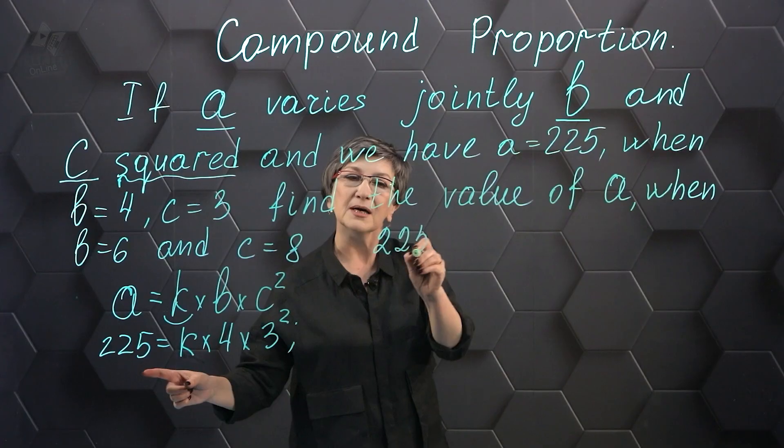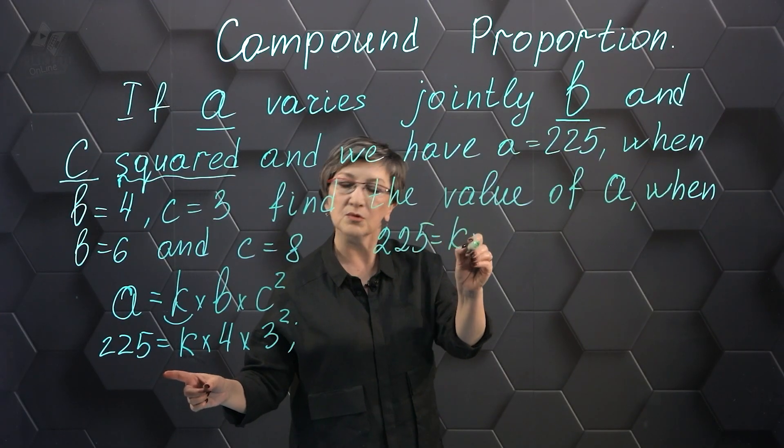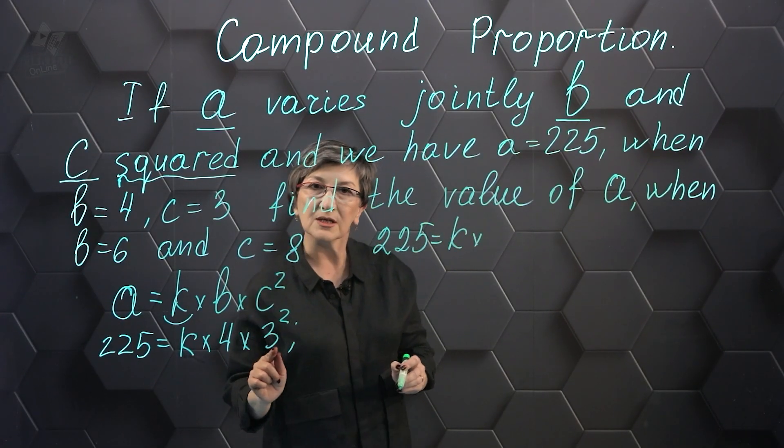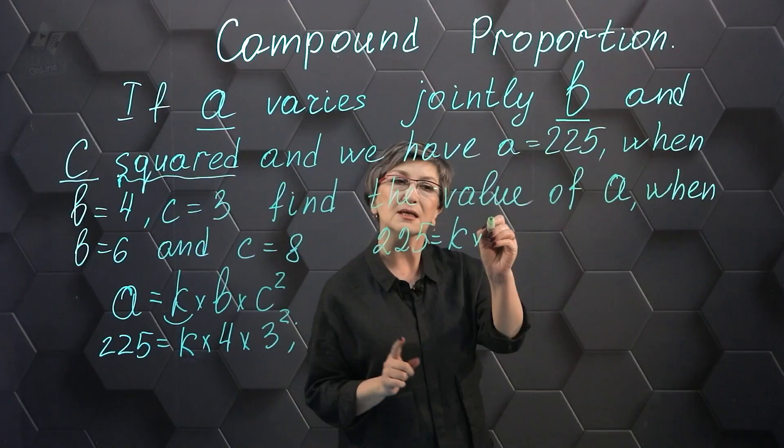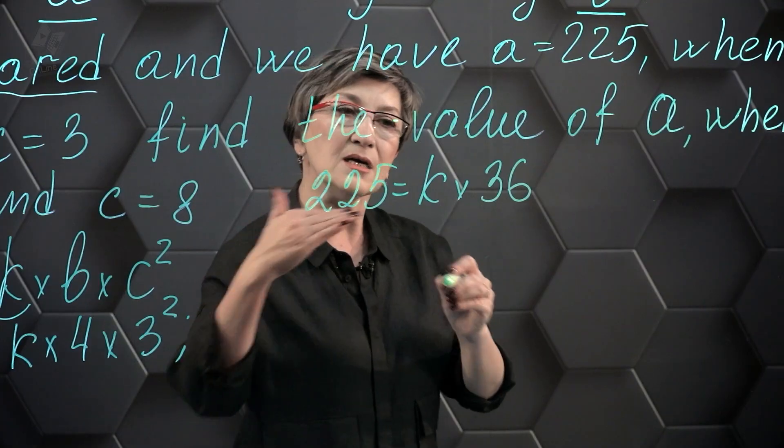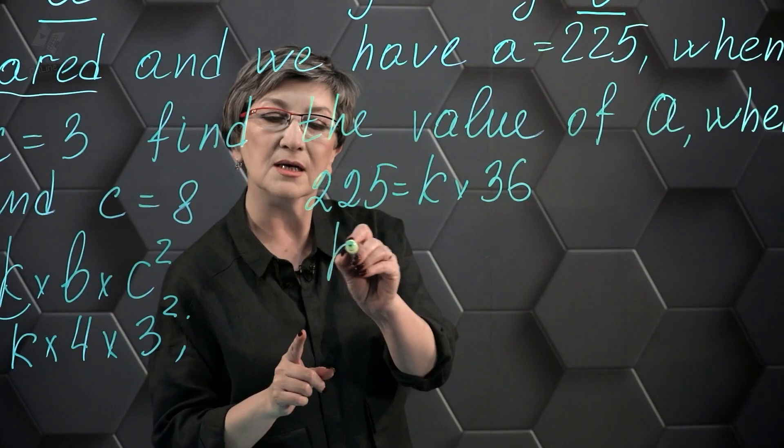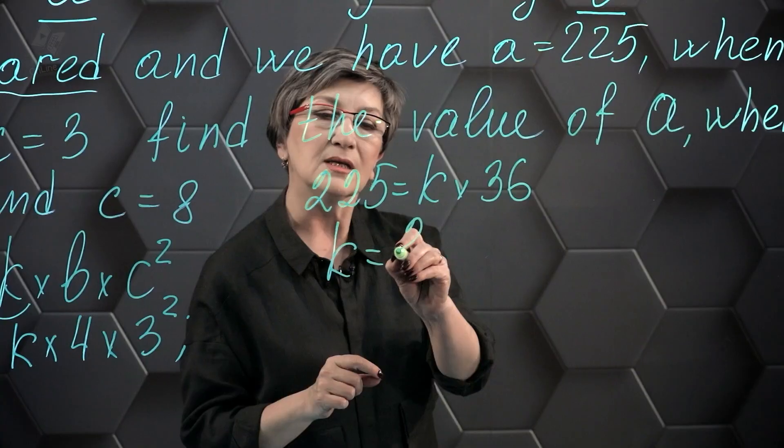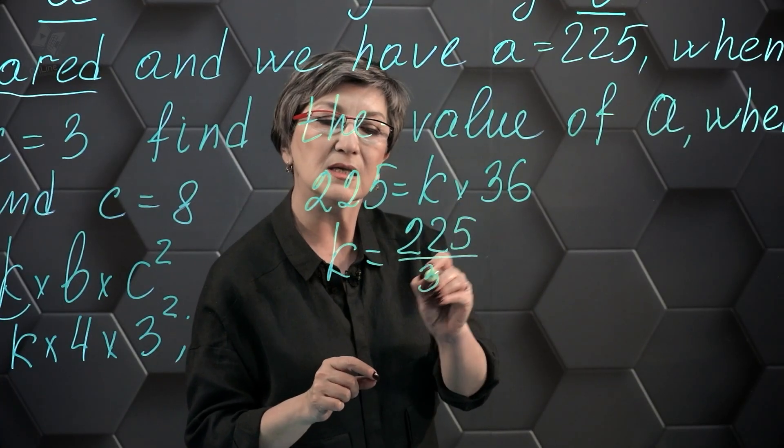Then 225 equals k times 4 times 3 squared, which is 36. From this equation we can find k: k equals 225 divided by 36.